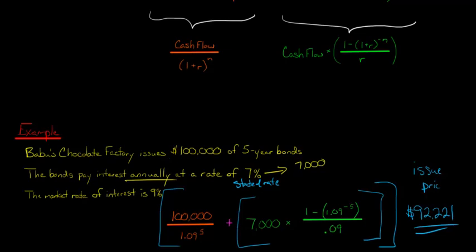Well, again, they're doing it because by the time Babu's gets around to issuing the bonds, the market rate of interest has gone up. Now it's 9%, and nobody's going to want to buy their bonds if they just pay 7% interest. So Babu says, we would be willing to issue the bond at a discount.